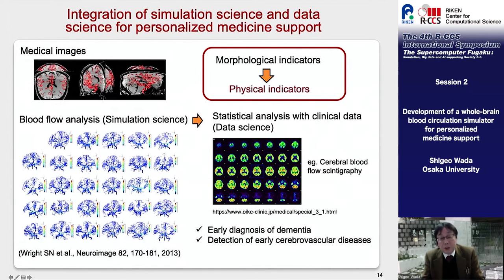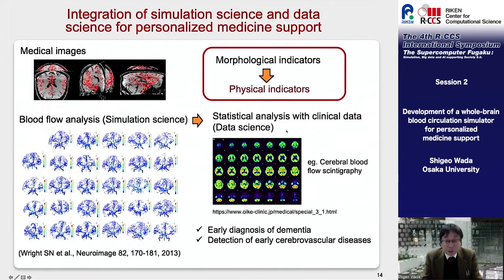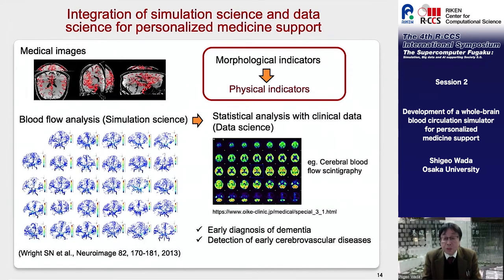By integrating simulation science based on physical analysis such as blood flow analysis and data science based on actual measurement data, it is expected that new pathological evaluation based on physical indicators will be possible. This may enable earlier detection of abnormalities in brain function and blood flow dynamics, even with individual differences.